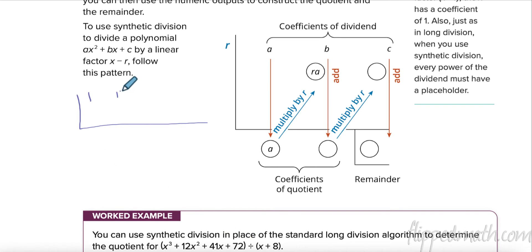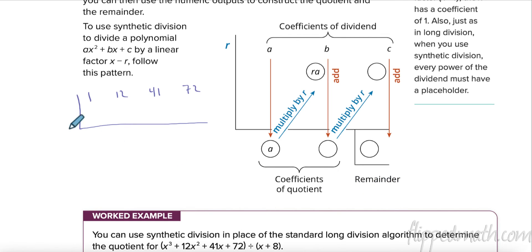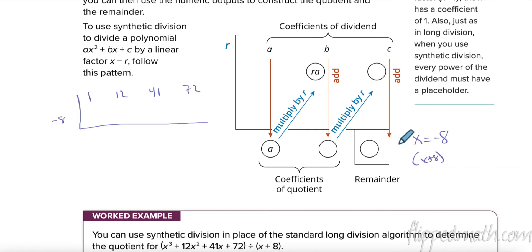So I have 1 for x cubed, 12 for x squared, 41 for x, and 72 as the constant. For the divisor x plus 8, I have to put in the opposite — set it equal to zero — so that's negative 8. I need to know the value when x equals that, so if the factor is x plus 8, I put negative 8.